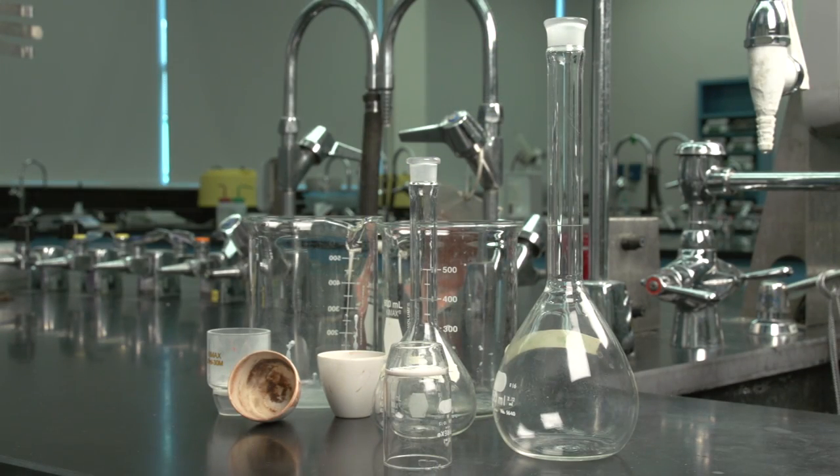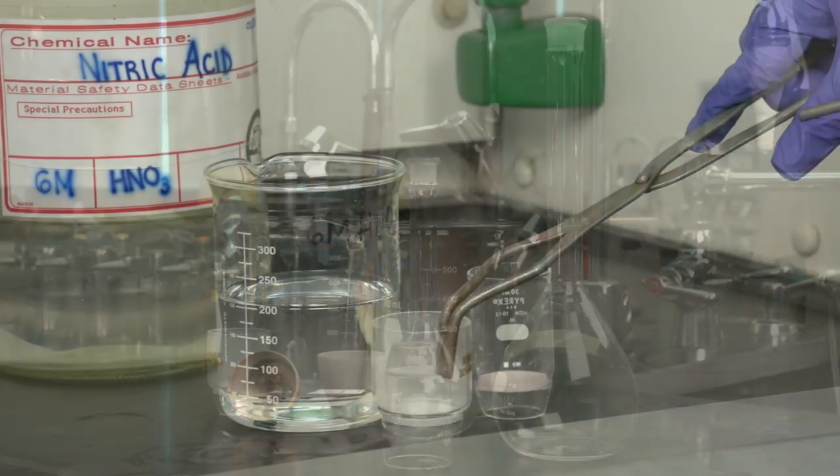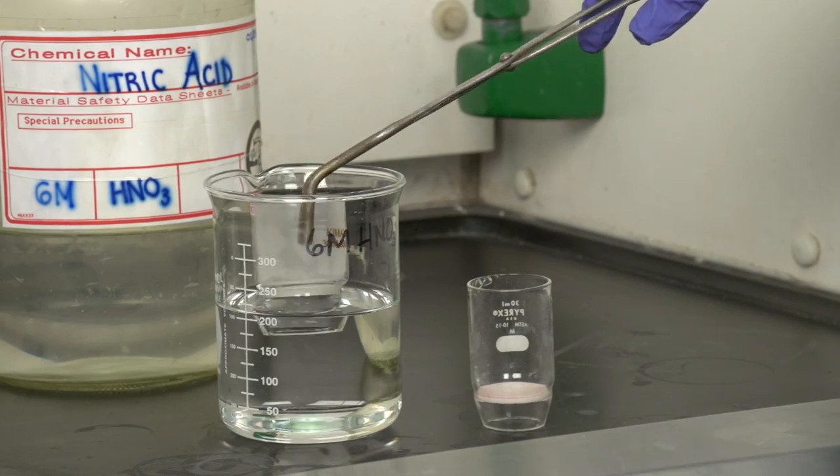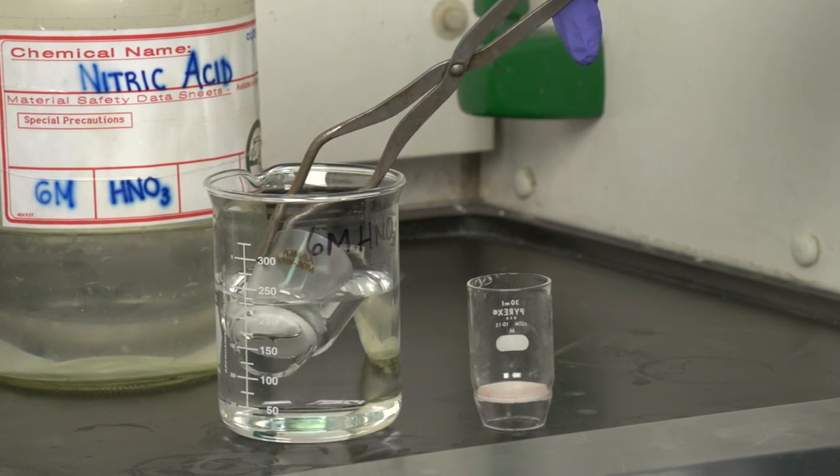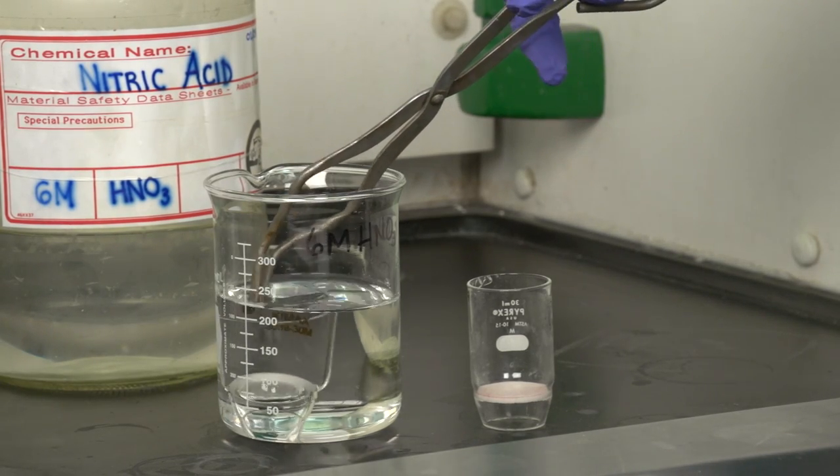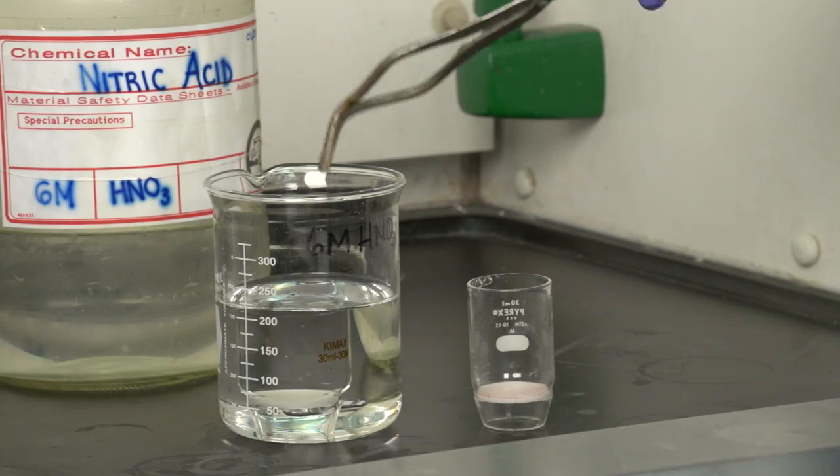Crucibles and other glassware that is contaminated with metals are cleaned by soaking in a solution of hydrochloric or nitric acid. Concentration is dependent on the type of residue to be removed.